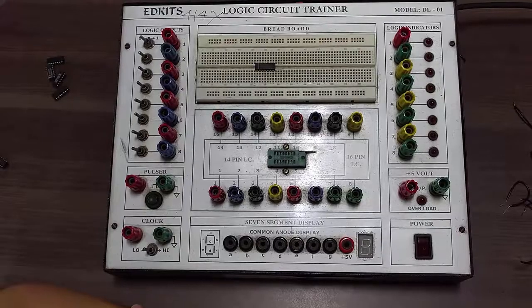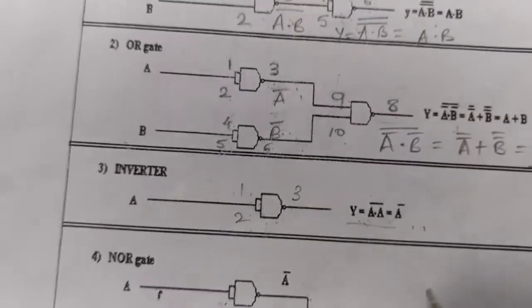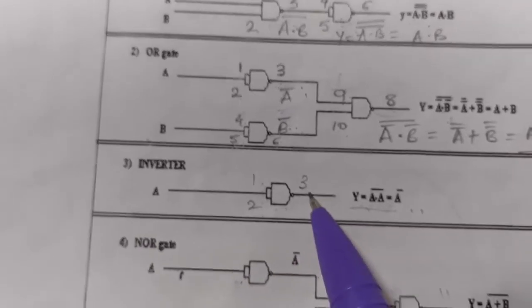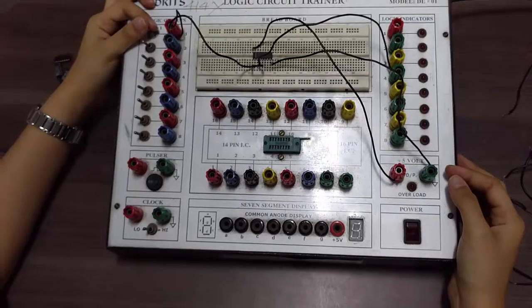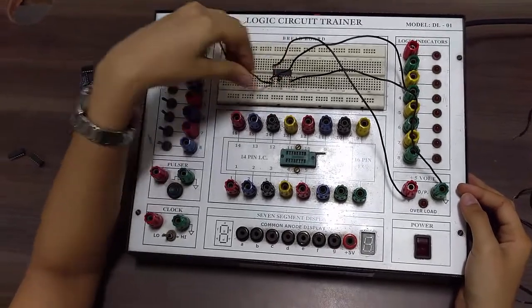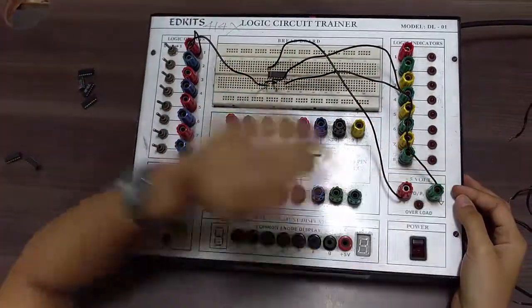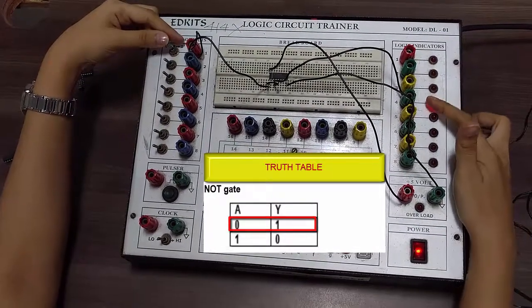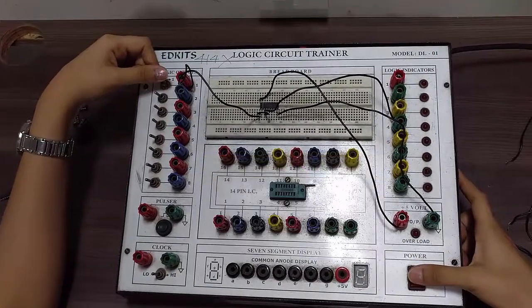Similarly we can obtain NOT gate with the help of NAND gate. Since NOT gate requires only 1 input, we short pin number 1 and 2, give it as input A, and output is taken from the 3rd pin. Hence we obtain NOT gate. Pin 14 is VCC and pin 7 is ground. Now let's verify the truth table for NOT. For input 0 we are getting output 1, and for input 1 we are getting output 0. Hence NOT gate is verified with the help of NAND gate.